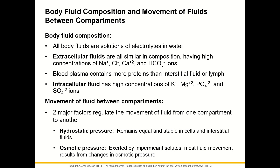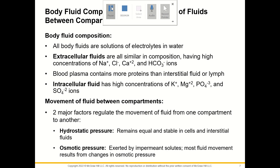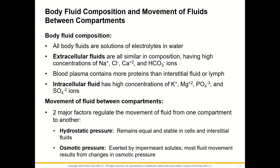Body fluid composition and movement of fluids between compartments: body fluids are solutions of electrolytes in water. Extracellular fluids are similar in composition, with high concentrations of sodium, chloride, calcium, and bicarbonate ions. Blood plasma contains more proteins than interstitial fluid or lymph. Intracellular fluid has high concentrations of potassium, magnesium, phosphate, and sulfate ions.